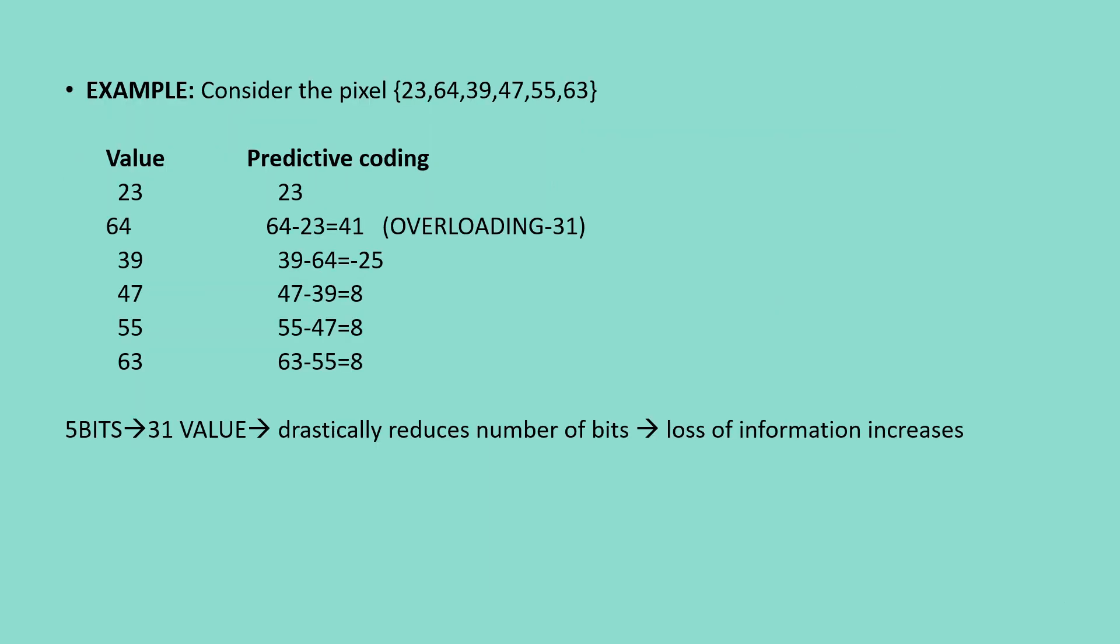Let us consider an example with the values 23, 64, 39, 47, 55, and 63. These are all the values present in a pixel. In the predictive coding, for 23 it would be 23. For 64, the present value minus previous value, which is 64 minus 23, equals 41. Similarly, for 39 it would be minus 25, and for 47, 55, and 63 it would be 8 respectively. In this example, we can see that a maximum of 5 bits is required, but this creates a problem of overloading. Because if you code 41, we need 6 bits for this plus 1 additional sign bit, which equals 7 bits. So 6 pixels into 7 bits equals 42 bits, which is a problem.